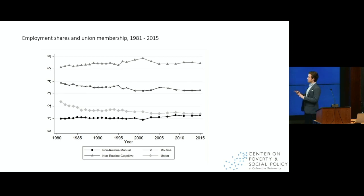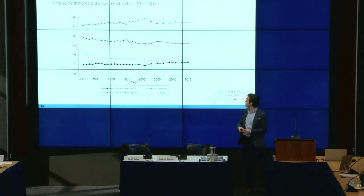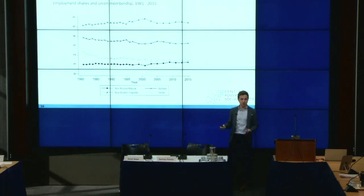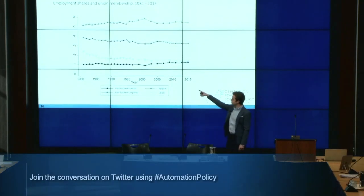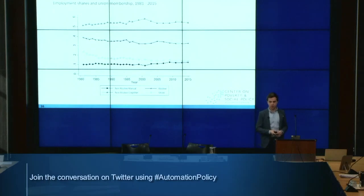Looking at employment shares of all employed adults and union membership from the PSID from 1981 to 2015: non-routine cognitive jobs show a slight increase from around 50% to about 55%. Routine occupations show a slight decline from about 40% to closer to 30%. Union membership shows a decline from about 25% to closer to 15%, consistent with past work. And non-routine manual occupations show a rise in employment shares over time.